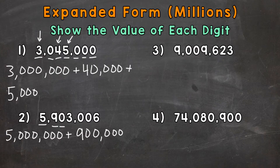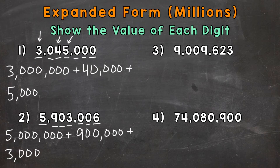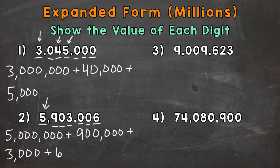Next, we have a zero in the ten thousands place, which we don't have a value to represent, so we'll move to the right again. We have a 3 in the thousands place, so it has a value of 3,000. We have a zero in the hundreds and a zero in the tens, so we go all the way over to the ones place, where we have a 6. That 6 is in the ones place, so it has a value of 6. To recap: the 5 had a value of 5 million, the 9 had a value of 900,000, the 3 had a value of 3,000, and the 6 had a value of 6.